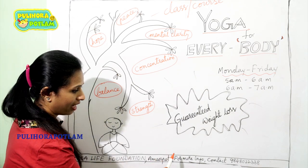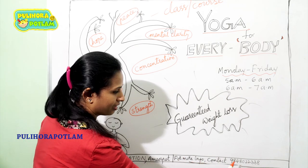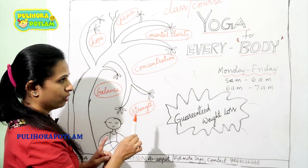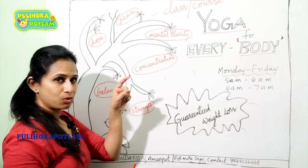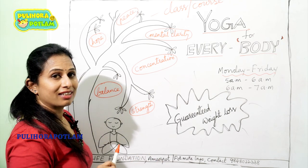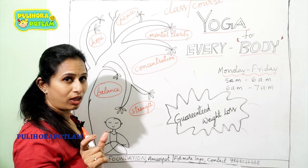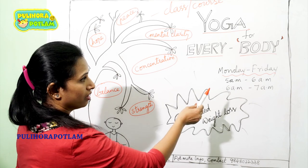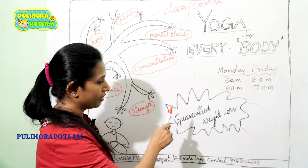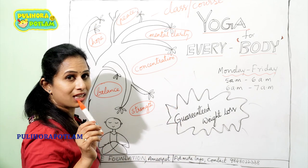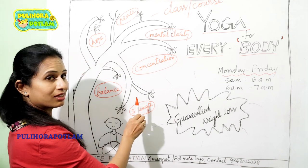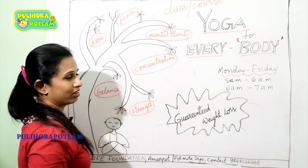You might have observed the difference between the first, second, and third posters. In this one I have given the location and contact address. In the previous one I didn't give the contact address or phone number — only the location of the store where it is available. And here I have mentioned both the timings and the duration. In the second poster I gave 'up to 30% off,' but here I give 'guaranteed weight loss.' This is the third type of poster, which is offering some class or course.